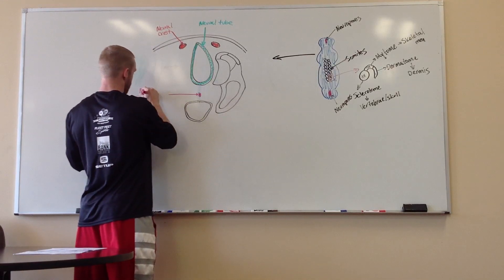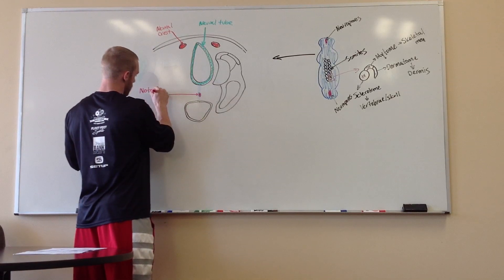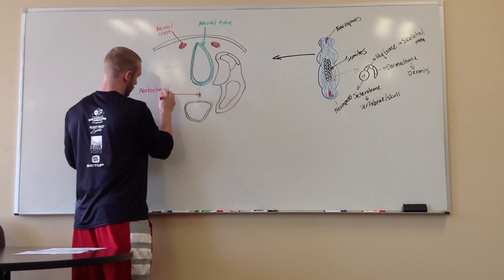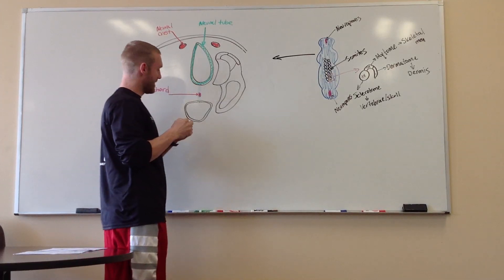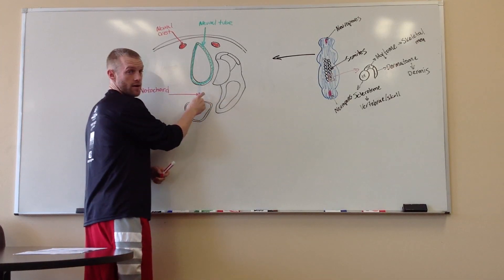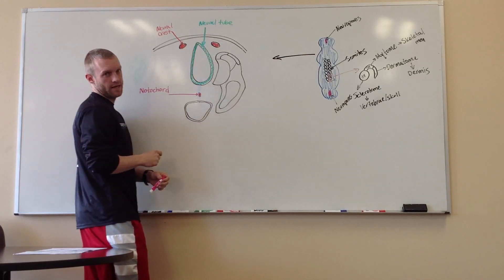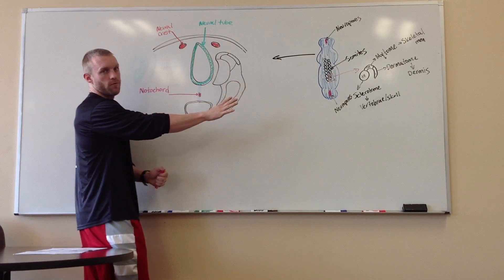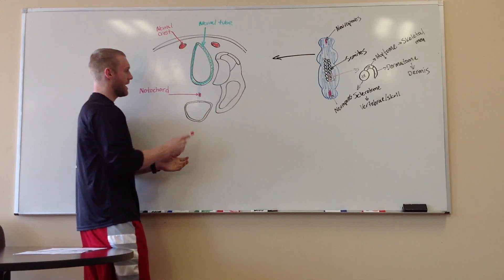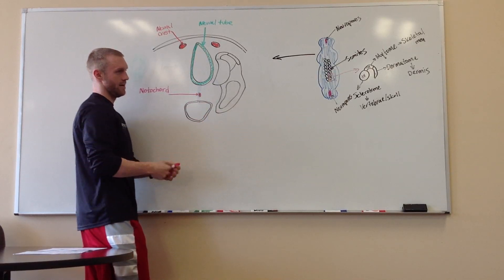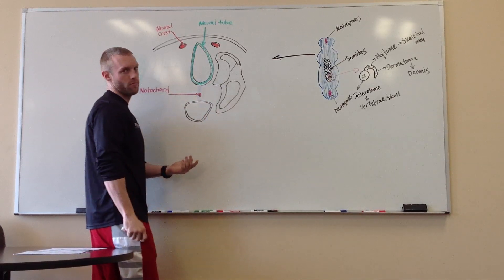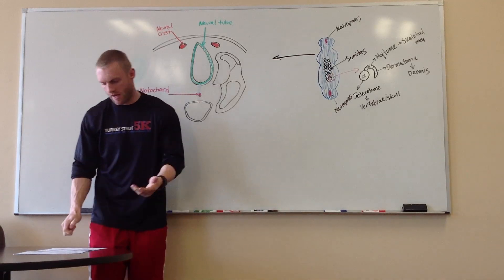This is, I hope I get this right, the notochord. This right here has to be present in order for the neural tube formation to occur. However, you can kind of look at this as the start button. If you don't have the start button, you can't start.